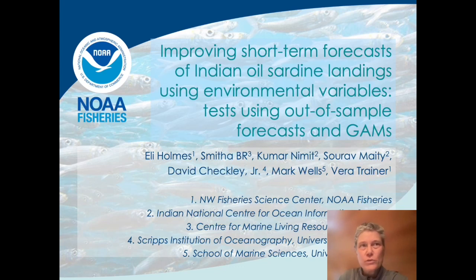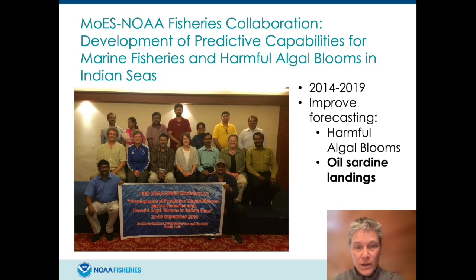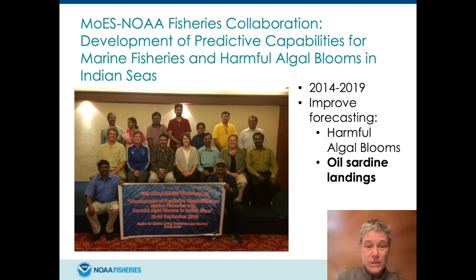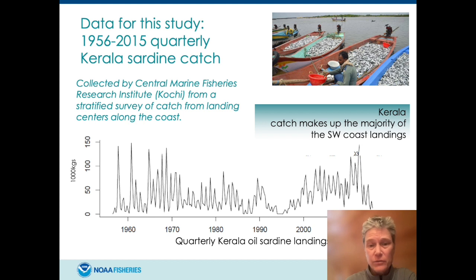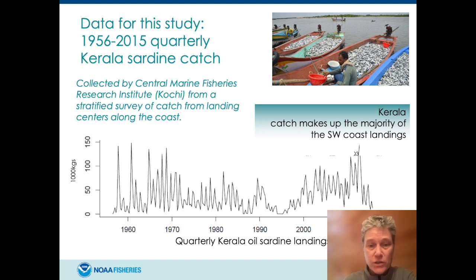Today I'm going to be sharing some research on using environmental variables to improve short-term forecast of the Indian oil sardine. This research is from a five-year collaboration between the Ministry of Earth Sciences and NOAA Fisheries that happened between 2014 and 2019. The research I'll talk about today will be using a quarterly landings time series collected by CMFRI, begun in 1956, using data up to 2015, from Kerala where the majority of catches occur.